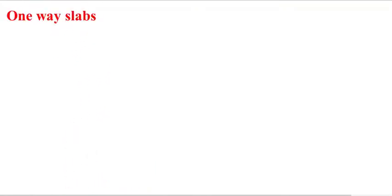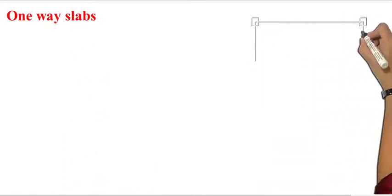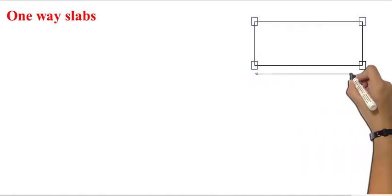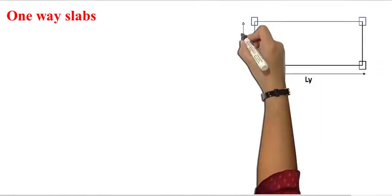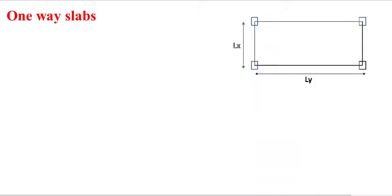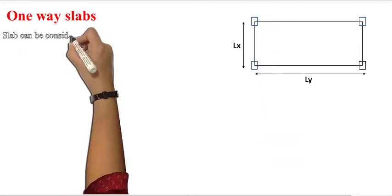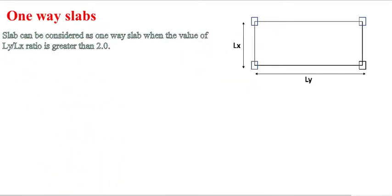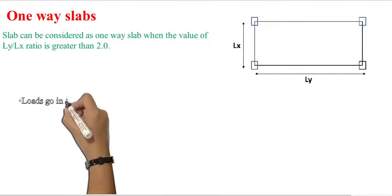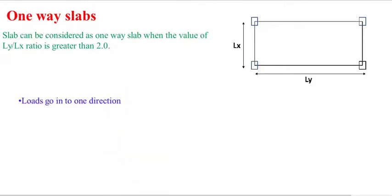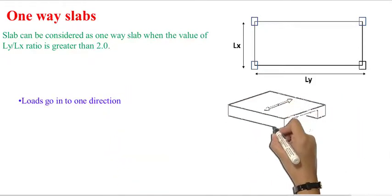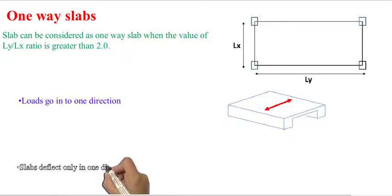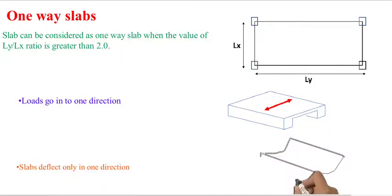One-way slabs: let us consider slabs that are supported on their four edges. If ly is the longer direction and lx is the shorter direction, a slab can be considered a one-way slab when the value of the ly/lx ratio is greater than two. In a one-way slab, loads go in one direction as indicated in the figure, and slabs deflect only in one direction as we can see in this diagram.